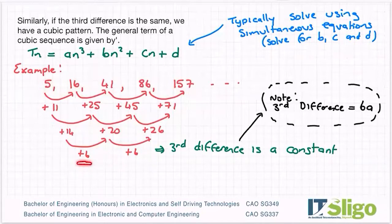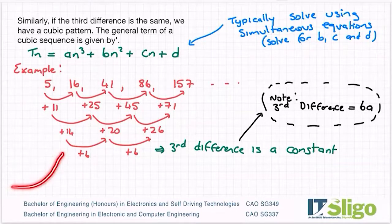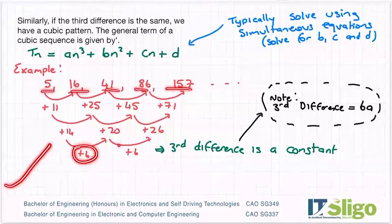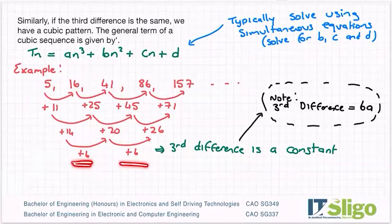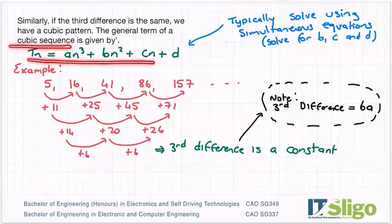Just as an aside, if the third difference isn't the same and there's no real pattern coming out of it, then it is most likely an exponential pattern. In other words, the numbers are getting significantly bigger but it's not a cubic function. You establish that the third difference is the same or is a constant. Therefore, you conclude that it's a cubic sequence with the general term given by tn = an³ + bn² + cn + d.